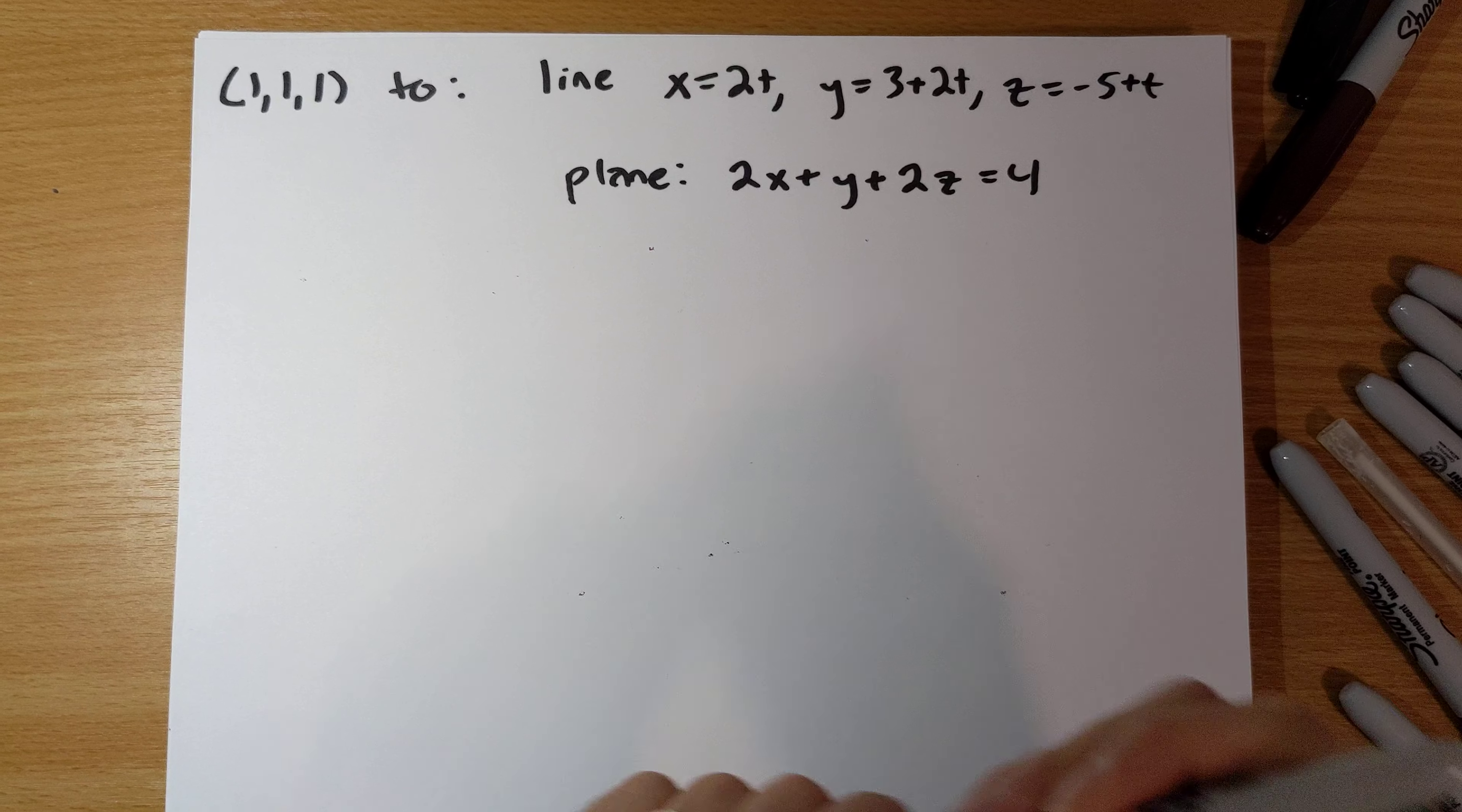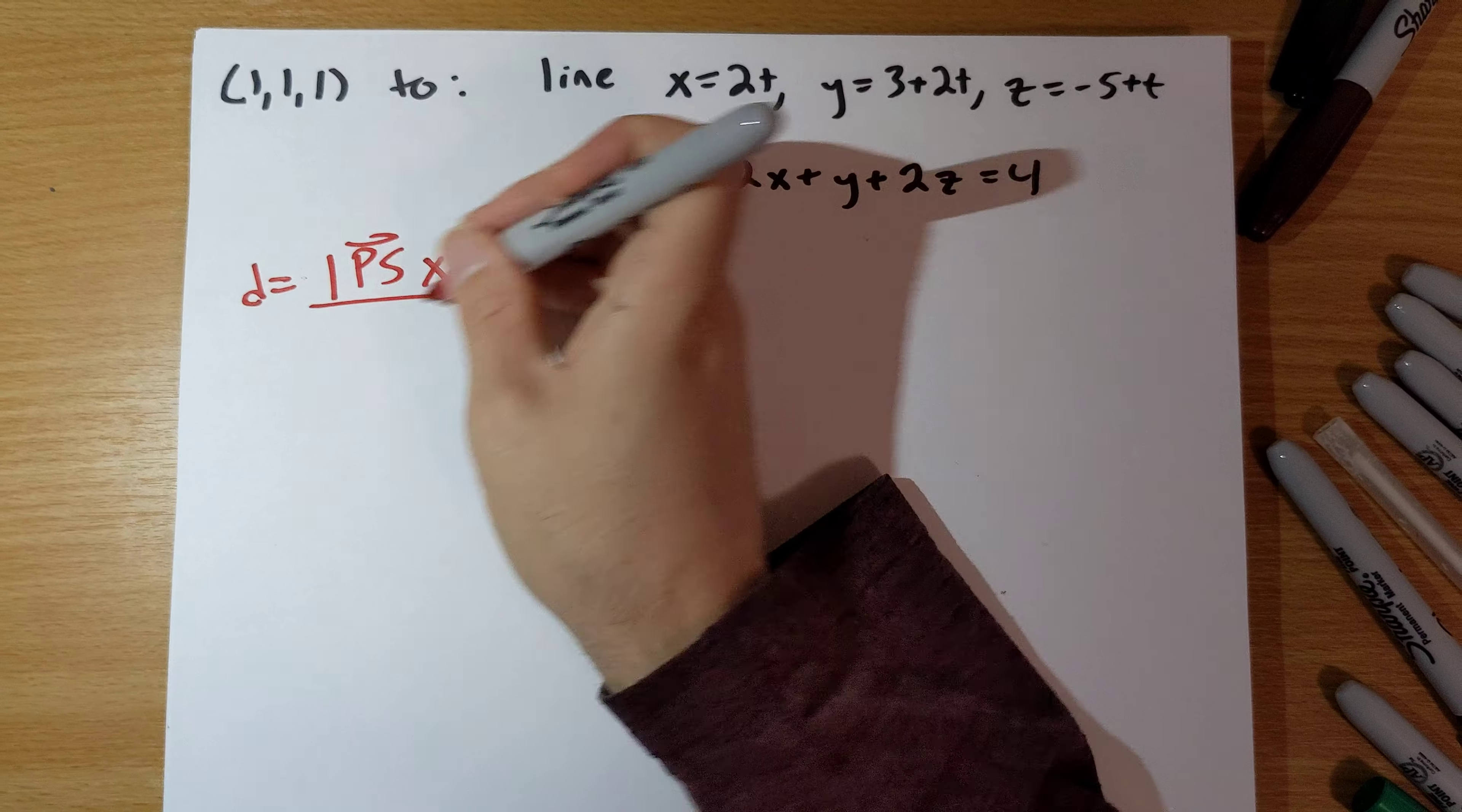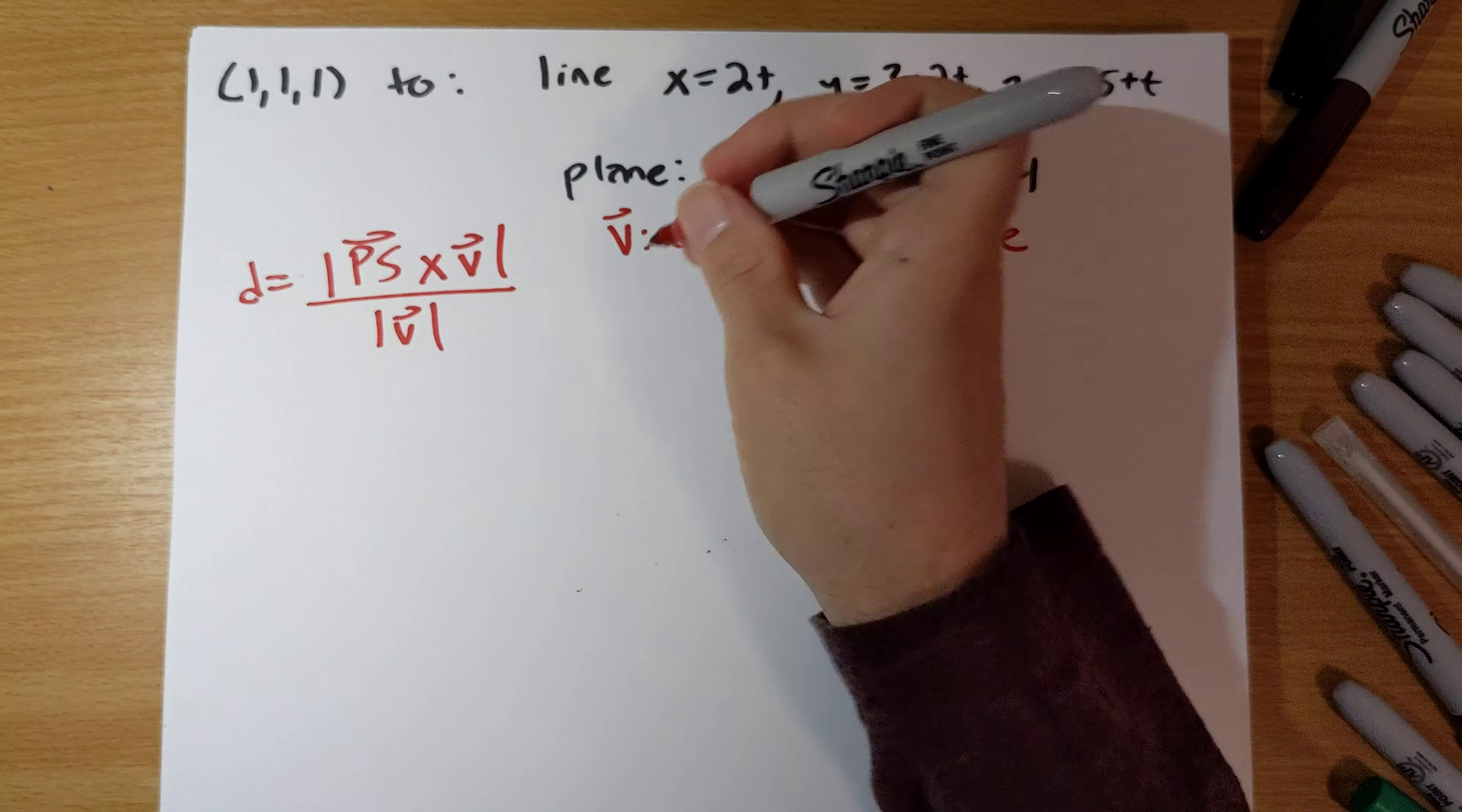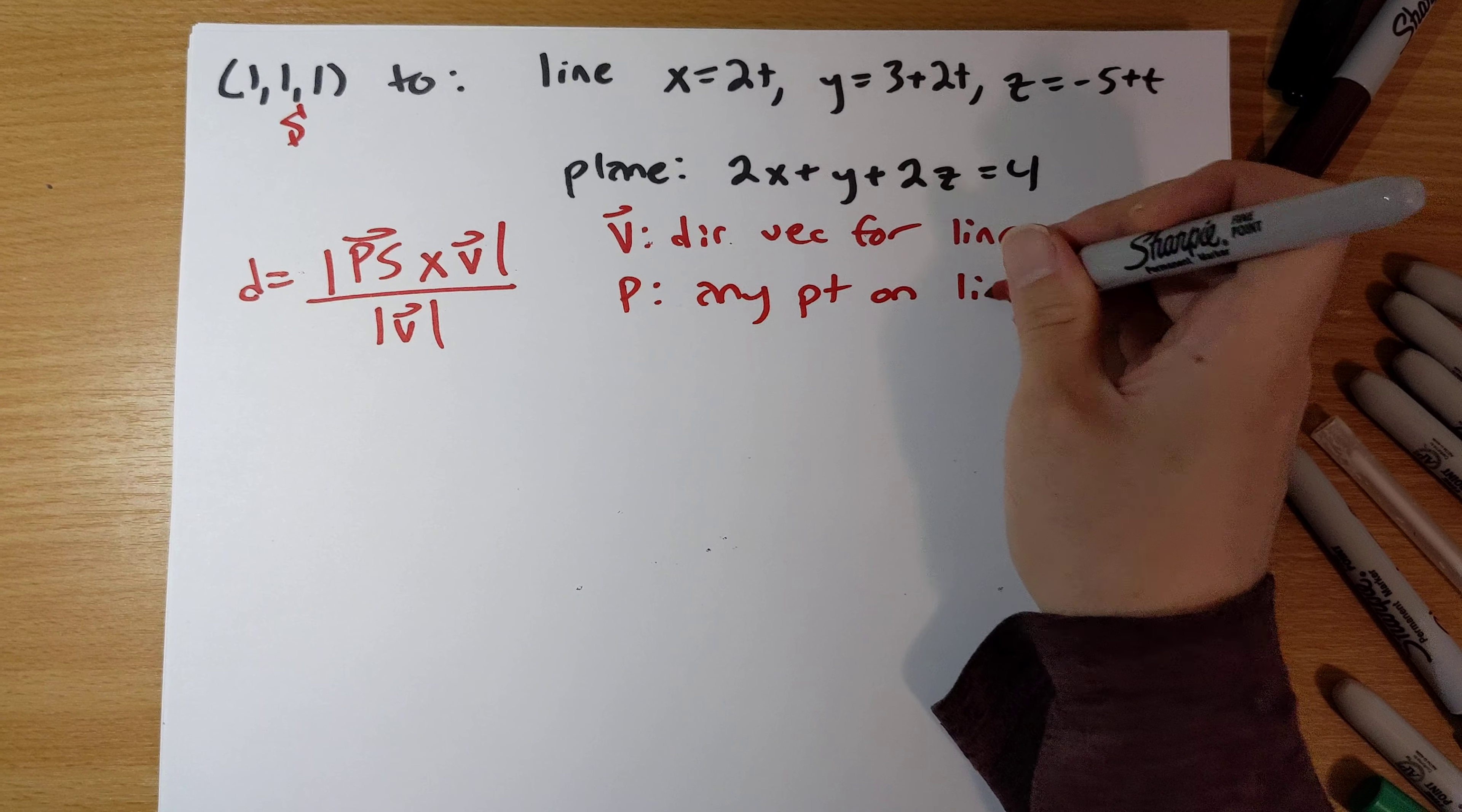Okay, so for the first part here, we need the following formula. D equals the magnitude of PS cross v over magnitude of v, where v is a direction vector for our line, and s is the point, this one, p is any point on the line.